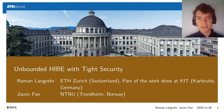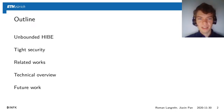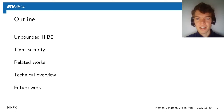Welcome to the presentation of the paper 'Unbounded Hierarchical Identity-Based Encryption with Tight Security.' My name is Roman Lager and this is joint work with Jasheen Pan. In the beginning of the talk I will briefly explain what unbounded HIBE is and what tight security means. Then I will talk about related works, give a technical overview of our construction, and finally some ideas for future work.